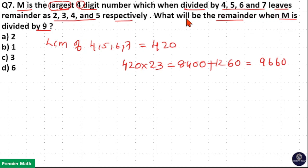Now this is the closest number which is divisible by 4, 5, 6 and 7. When divided by 4 it will leave remainder 2, when divided by 5 remainder is 3, when divided by 6 remainder is 4, and when divided by 7 remainder is 5.